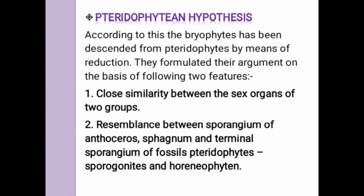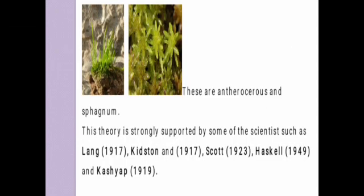According to this hypothesis, bryophytes have descended from pteridophytes by means of reduction. They formulated their argument on the basis of two features: close similarity between the sex organs of the two groups, and resemblance between the sporangium of Anthoceros and Sphagnum and the terminal sporangium of fossil pteridophytes.